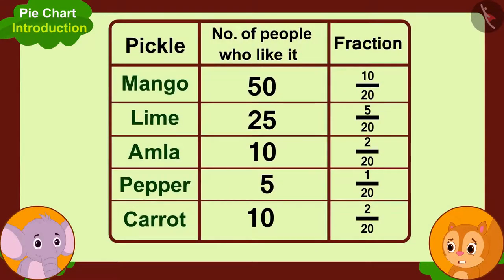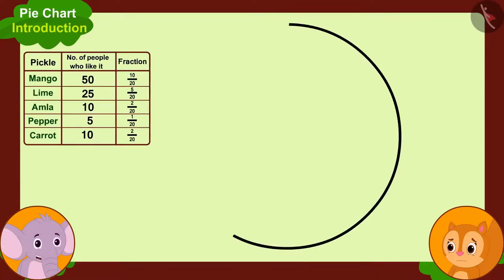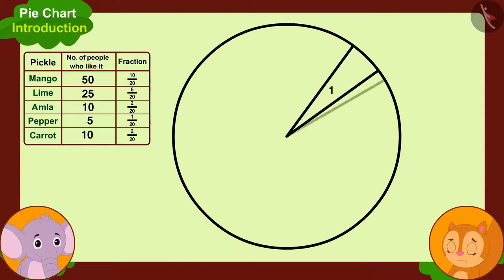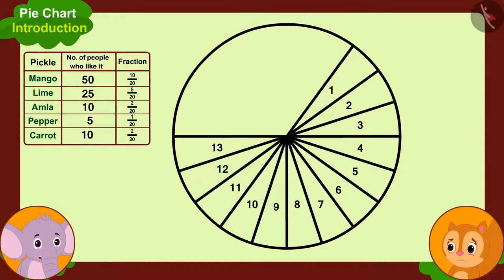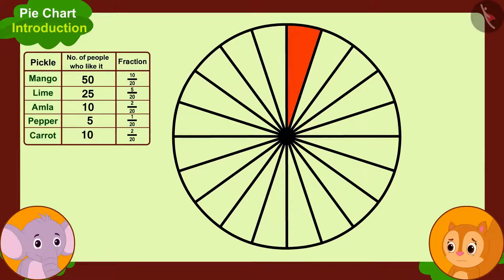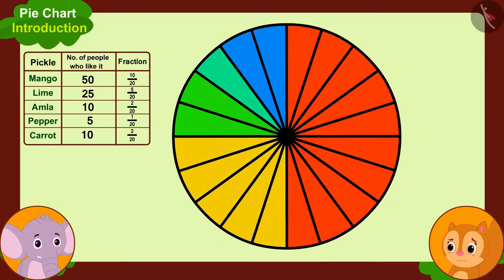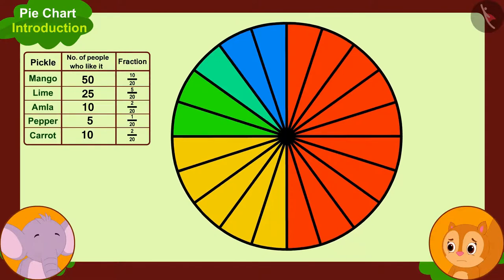Chanda notices Appu hasn't made any pie yet. Appu says, 'Don't worry. Now we are going to make the pie of the pie chart.' They make a circle and divide it into 20 equal parts. Finally, they color these parts of the pie chart as per the fractions and illustrate it using the circle.